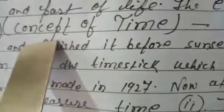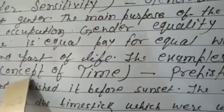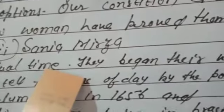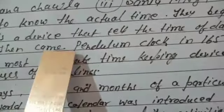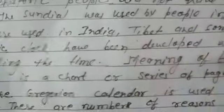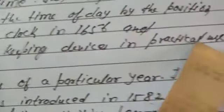Our fifth chapter is Concept of Time. Prehistoric people did not have any device to know the actual time. They began their work with sunrise and finished it before sunset. The sundial was used by people in early days — it is a device that tells the time of day by the position of the sun. Then came the time stick, used in India, Tibet, and some parts of Europe. The pendulum clock came in 1656, quartz clocks were made in 1927, and now atomic clocks have been developed, which are the most accurate timekeeping devices in practical use today.